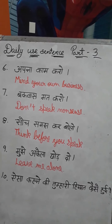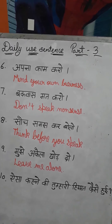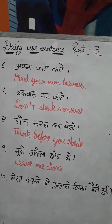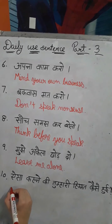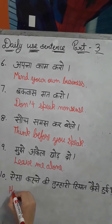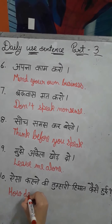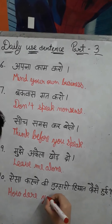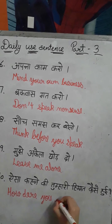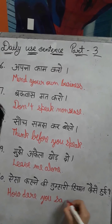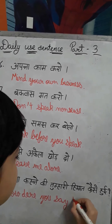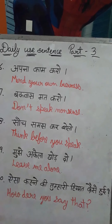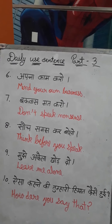So my tenth sentence is: Aisa kehne ki tumhari himmat kaise hui. We will write it in English like: How dare you say that? One more time — How dare you say that?